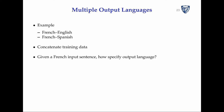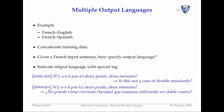Consider multiple output languages: if you have a French-English corpus and a French-Spanish corpus, you concatenate the training data. But you have the problem that given a French input sentence, the system doesn't know whether to produce English or Spanish. The solution is to attach a special tag to each source sentence indicating the target language. If you put an English tag in front, it produces English; if you put a Spanish tag in front, it produces Spanish.